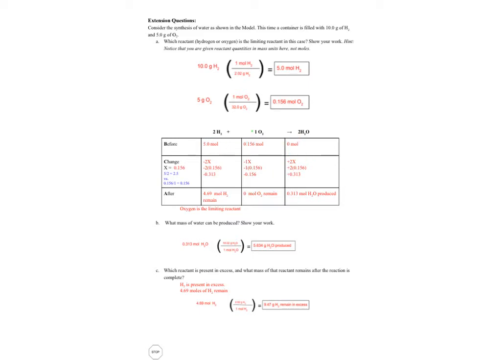So now I need to find X and that's what I'm doing down here in blue. So I take 5 moles divided by 2 and that gives me 2.5. I take 0.156 divided by 1 and that gives me 0.156 and I compare those.